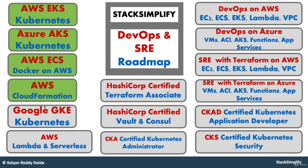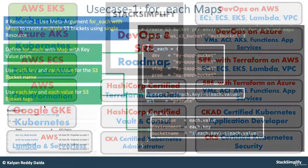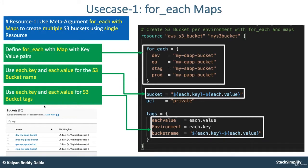Welcome back. In this lecture, we are going to implement use case one, which is 'for_each with maps' for a resource. The meta argument for_each we are going to use with maps, and then we are going to create an S3 bucket for multiple environments using a single S3 bucket resource.